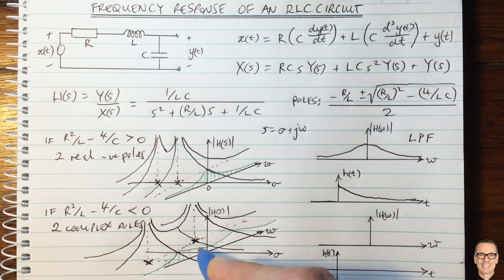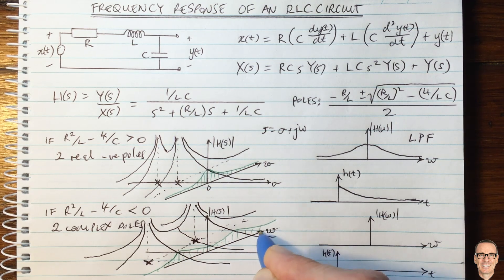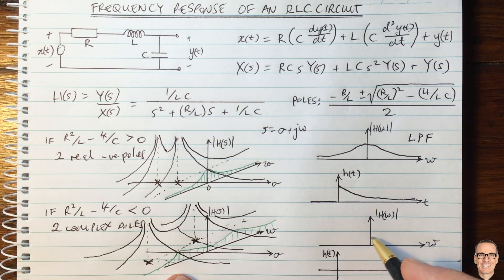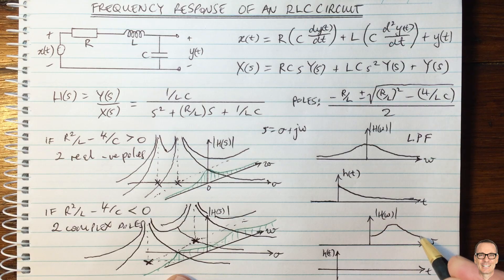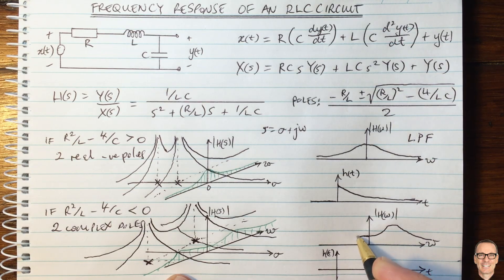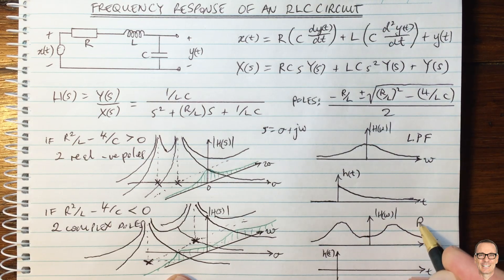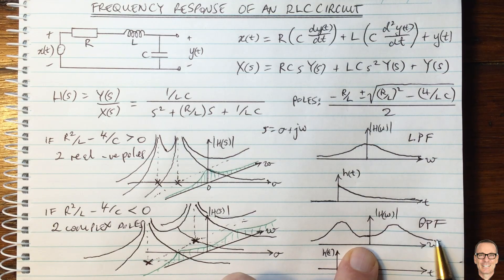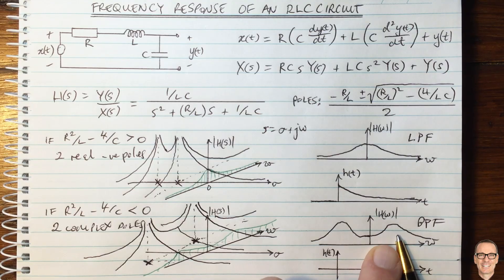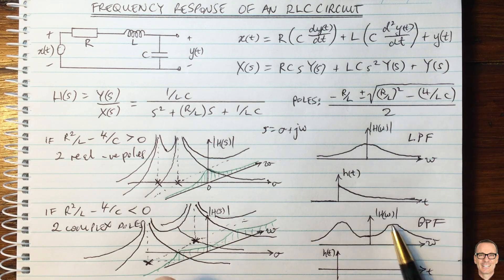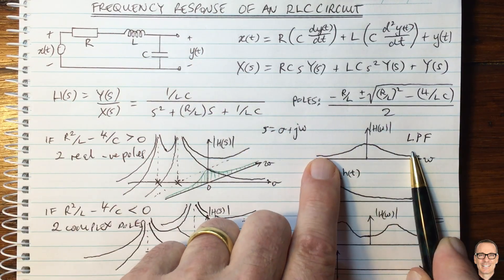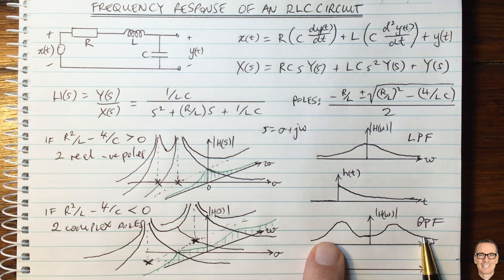Drawing the green slice along the omega axis where sigma equals zero, the frequency response is a function that looks like a band pass filter — not a low pass filter. Low frequencies are suppressed, high frequencies are suppressed, but frequencies in the middle band are propagated through. So depending on the values of R, L, and C, this circuit gives either a low pass filter or a band pass filter.